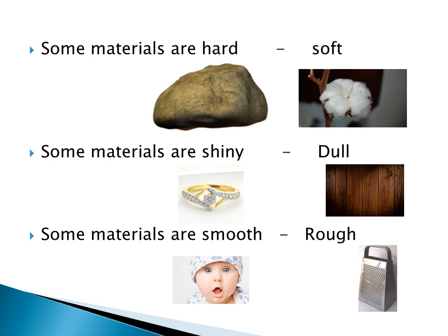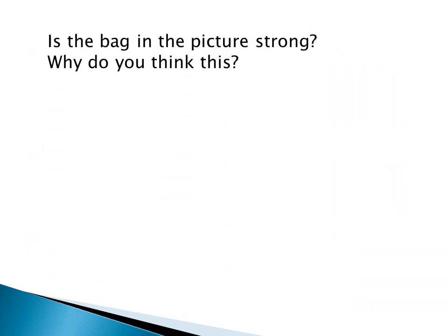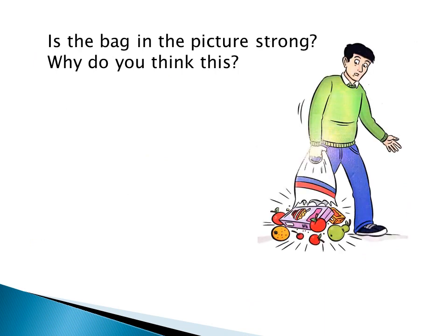Look at this picture — this man is holding a bag and everything inside it is falling out. Why do you think this happened? Because this material is so weak that it cannot hold the heavy objects inside. So strong and weak are properties of materials, and heavy and light are also properties of materials.